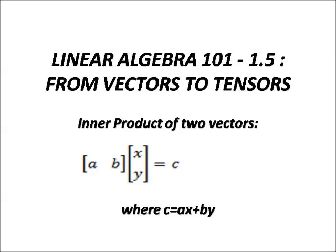The inner product of two vectors: [a, b] times column vector [x, y] equals c, where c equals ax + by.